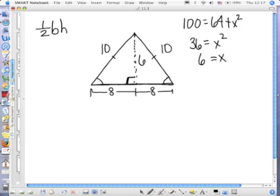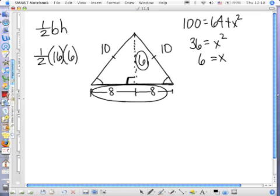So now I know the pieces that I need to know to find the area of the triangle. I need to know the length of the base and the height. So it's 1 half times 16 times 6. Half of 16 is 8 and 8 times 6 is 48.